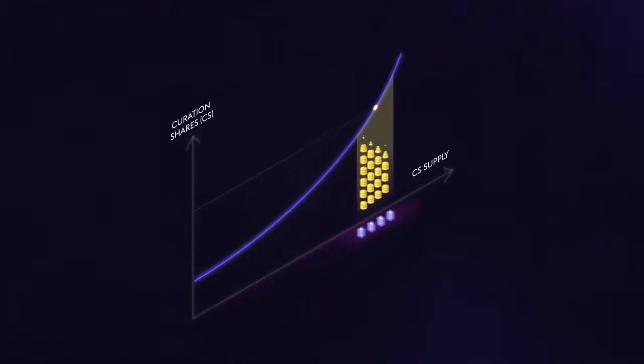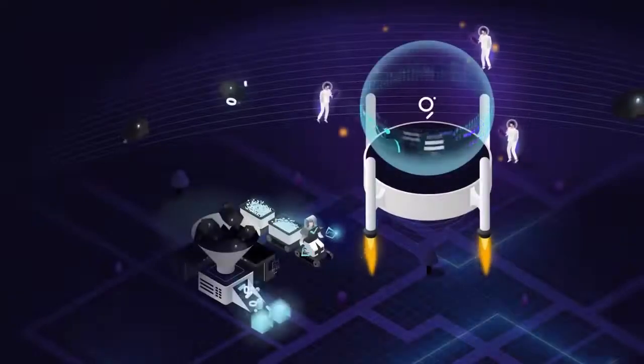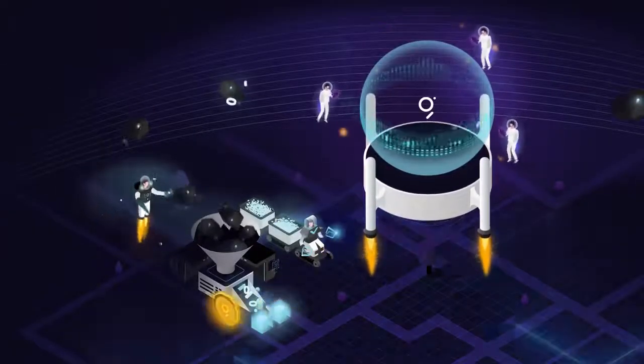It also means that when you go to withdraw your GRT, you could end up with more or less graph tokens than you started with. When curators signal on a subgraph, that creates a reward to incentivize indexers to index that subgraph.